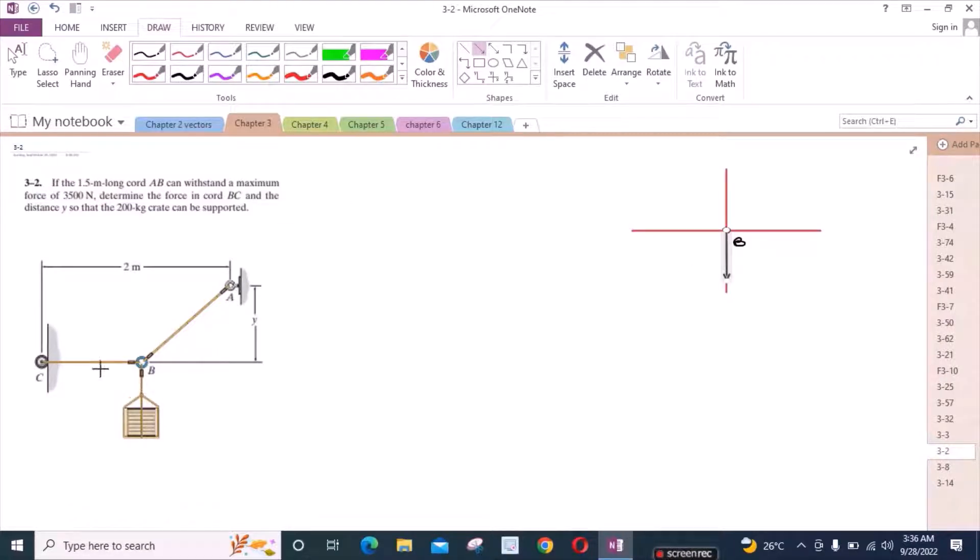And we have the tension of this chord BC. And we have one more force which is inclined at some angle, the tension in the string AB. Now this force is at some angle theta. Let's call this FAB. This is FBC. And this is the weight, which is equal to 200 into 9.81.